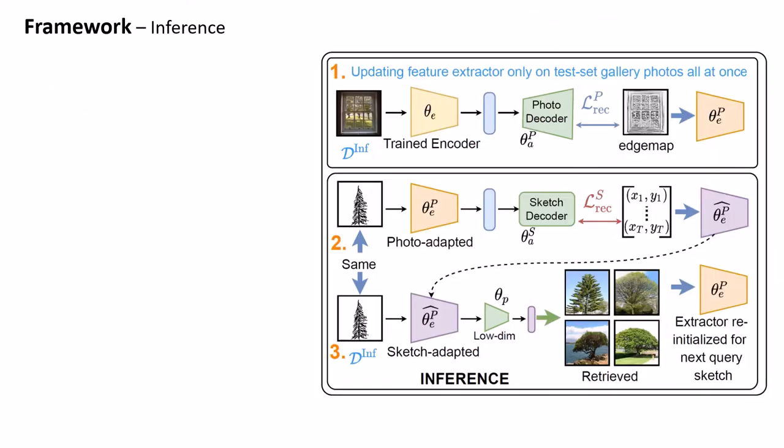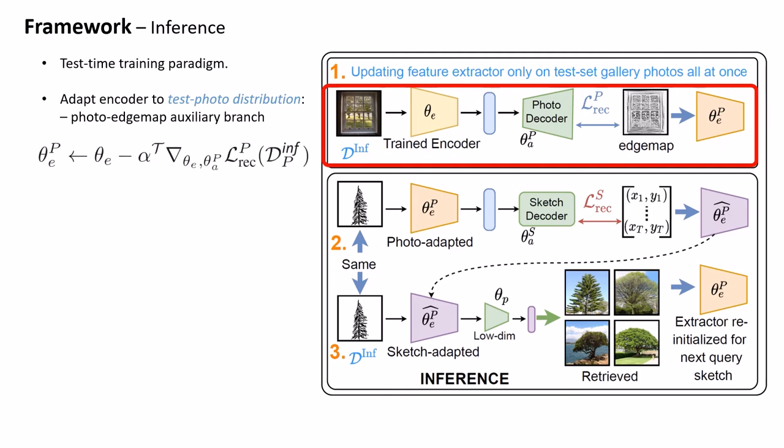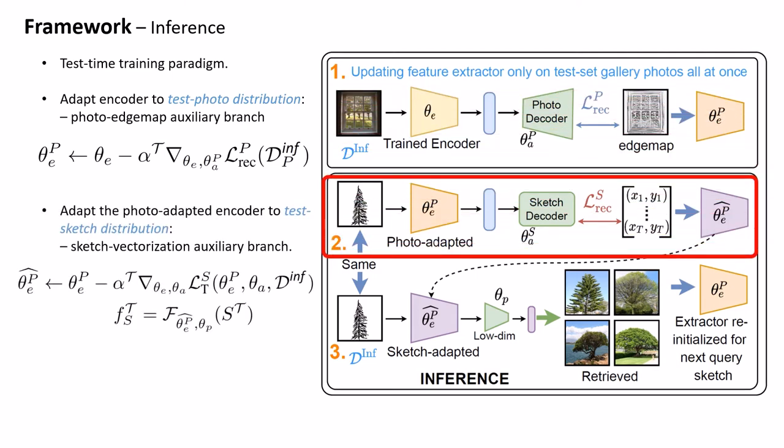Once trained the model is now introduced to test-time training paradigm. First, we optionally use the photo edge map auxiliary branch to adapt the trained model to test photo distribution via photo-to-edge map translation on the entire gallery of test-set photos. Next, during inference, we utilize the sketch raster-to-vector translation branch to perform test-time training for each sketch query as shown and adapt the model to test sketch distribution.